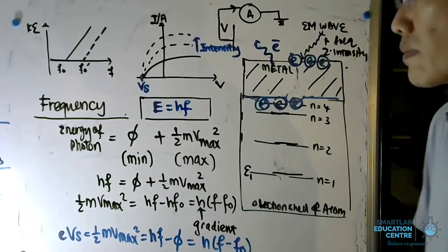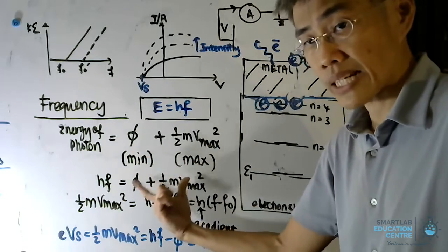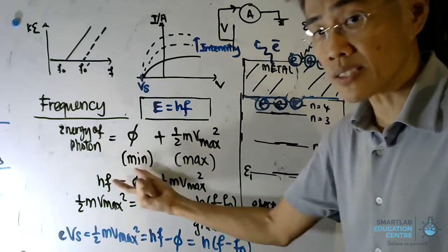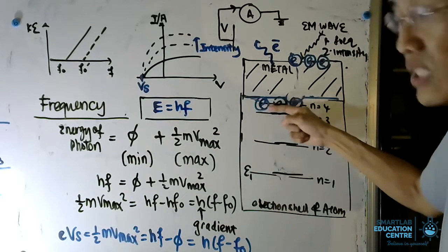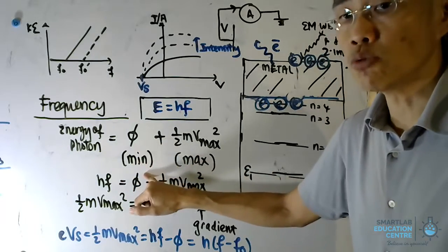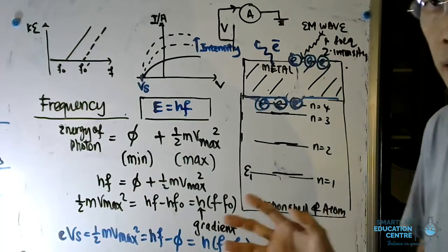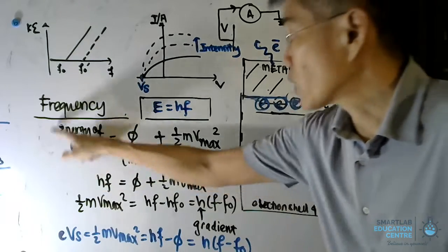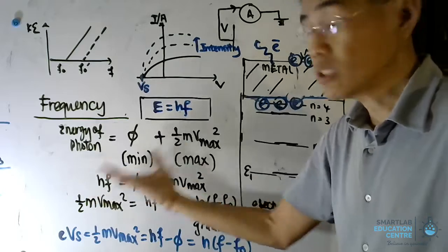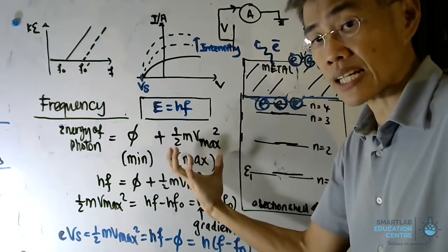The photoelectric equation states that the energy provided by the photon is absorbed by the electron. Part of this energy is used to overcome the work function energy — the minimum energy needed to move electrons in the outermost shell to the surface of the metal so they can undergo photoelectric emission. A photon's energy is either fully absorbed or not absorbed at all. The remaining energy after subtracting the work function becomes the maximum kinetic energy of the emitted photoelectrons.